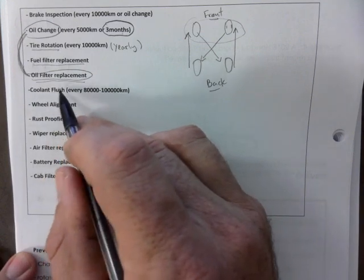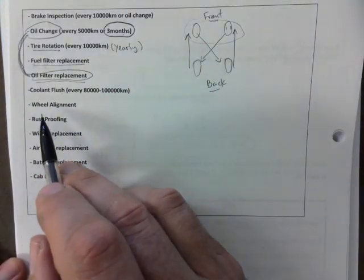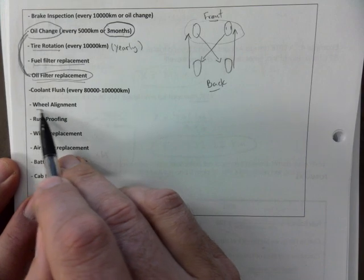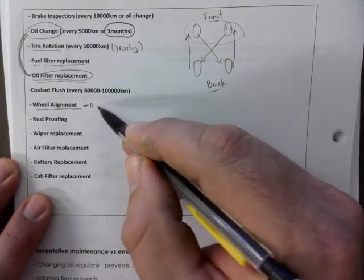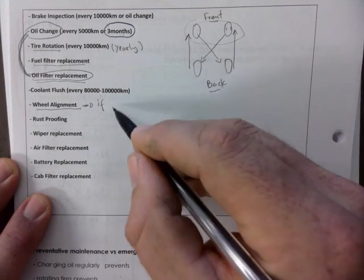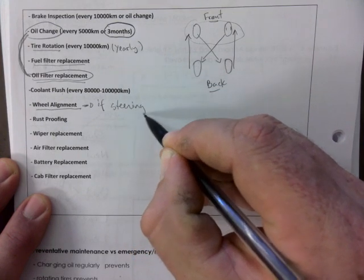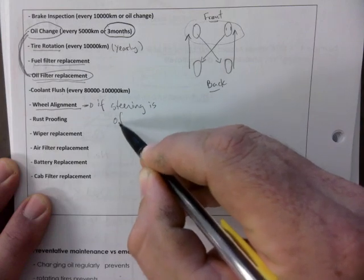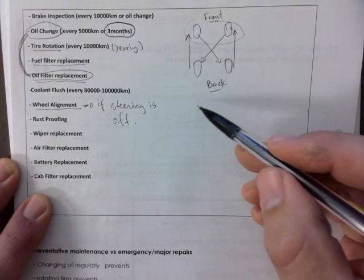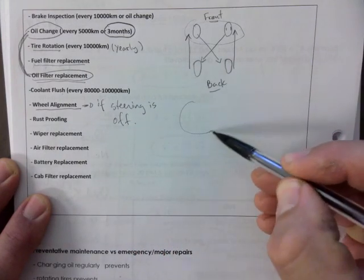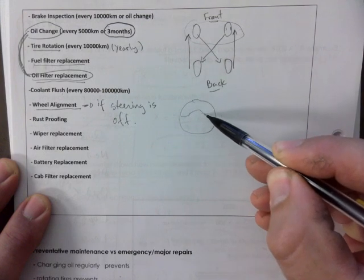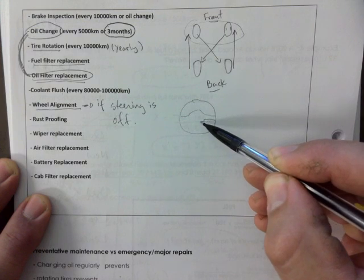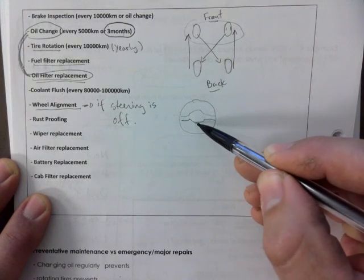Wheel alignment - if your steering is off. How would you know that your steering is off? Well, if this is your steering wheel and you have some sort of... this is your steering wheel.